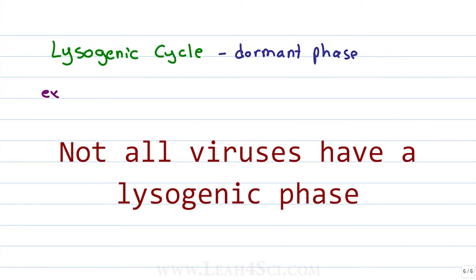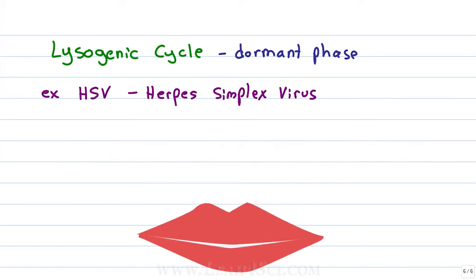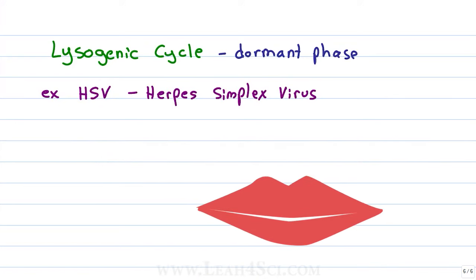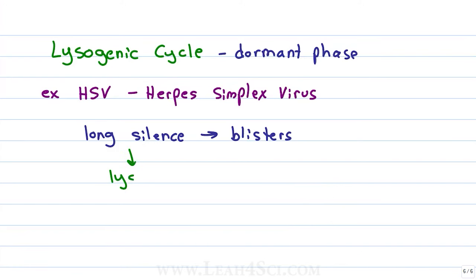The lysogenic cycle is the dormant phase and this is typically not what we think of when we picture a viral infection. A common example of this is the herpes simplex virus. Many people have the virus without any symptoms, they can have it for months or even years and then something happens and they erupt with cold sores and painful blisters. How does this happen? Why is herpes silent and then suddenly causes blisters only to go silent again for months or years before another breakout? The silent phase is the lysogenic phase of the herpes virus but then it can go into the lytic phase to cause an eruption before going back into the lysogenic phase.